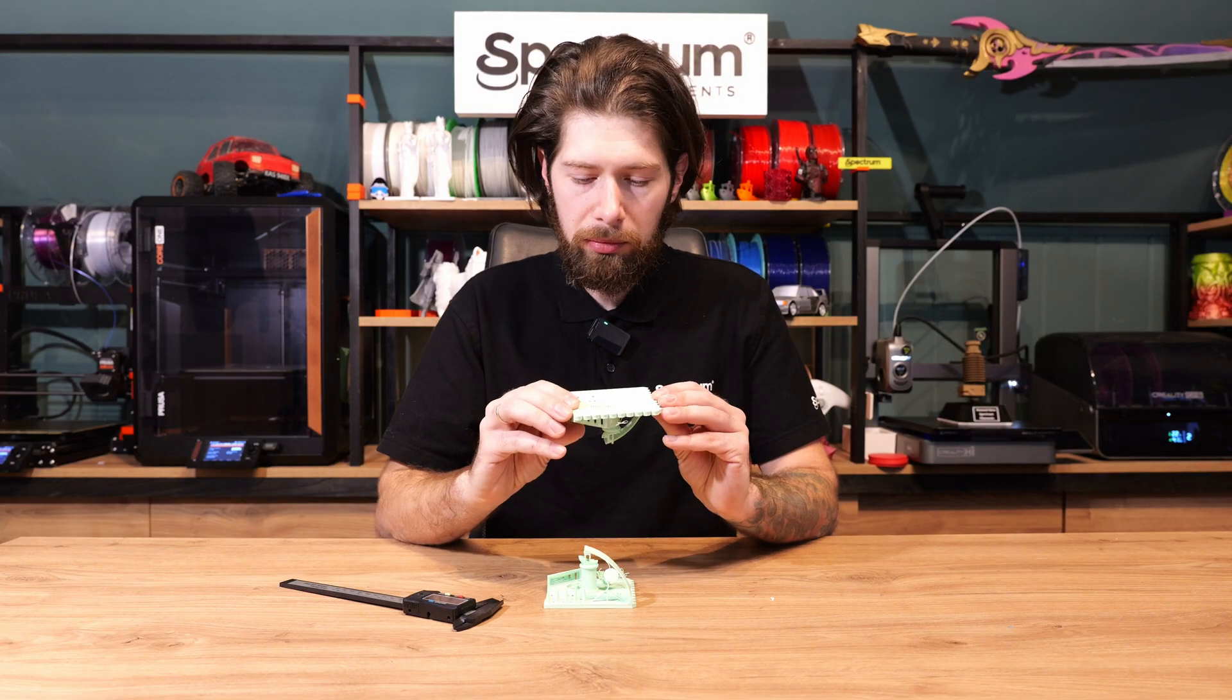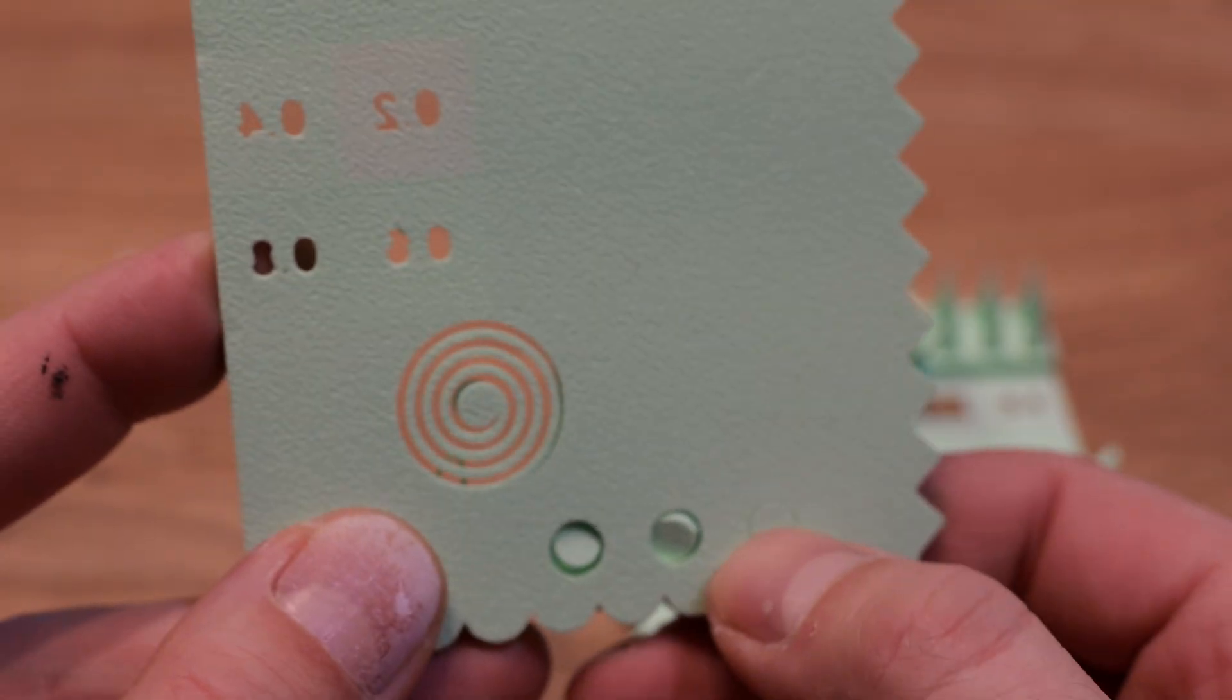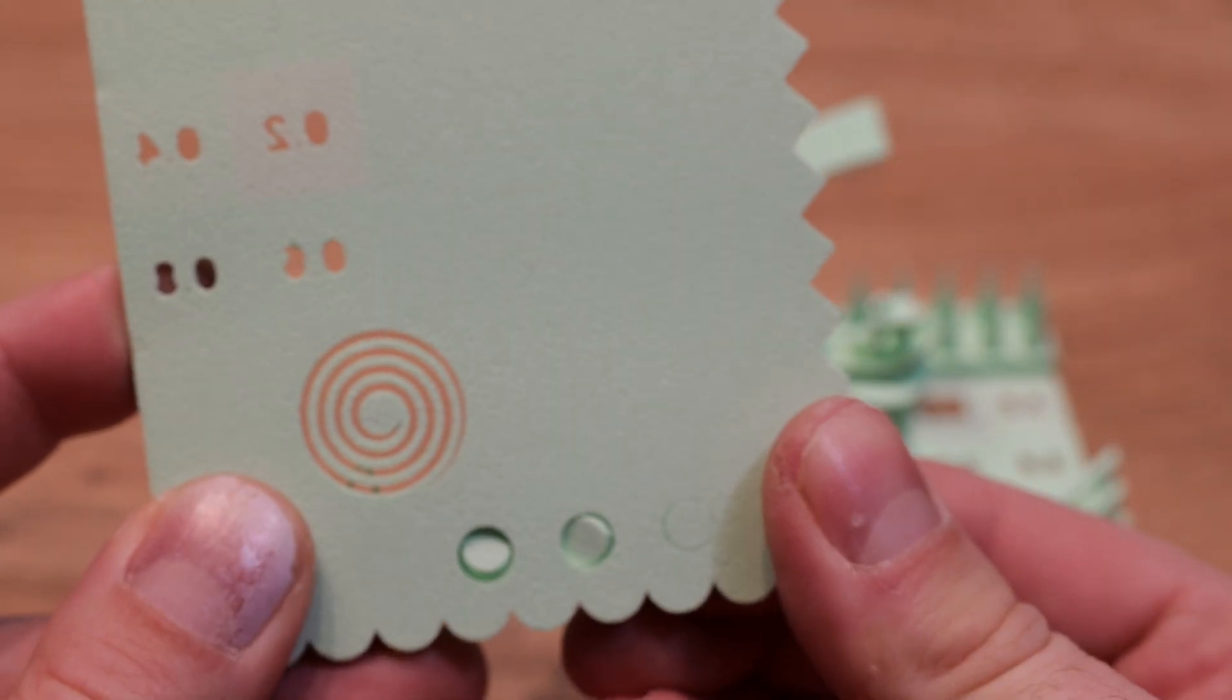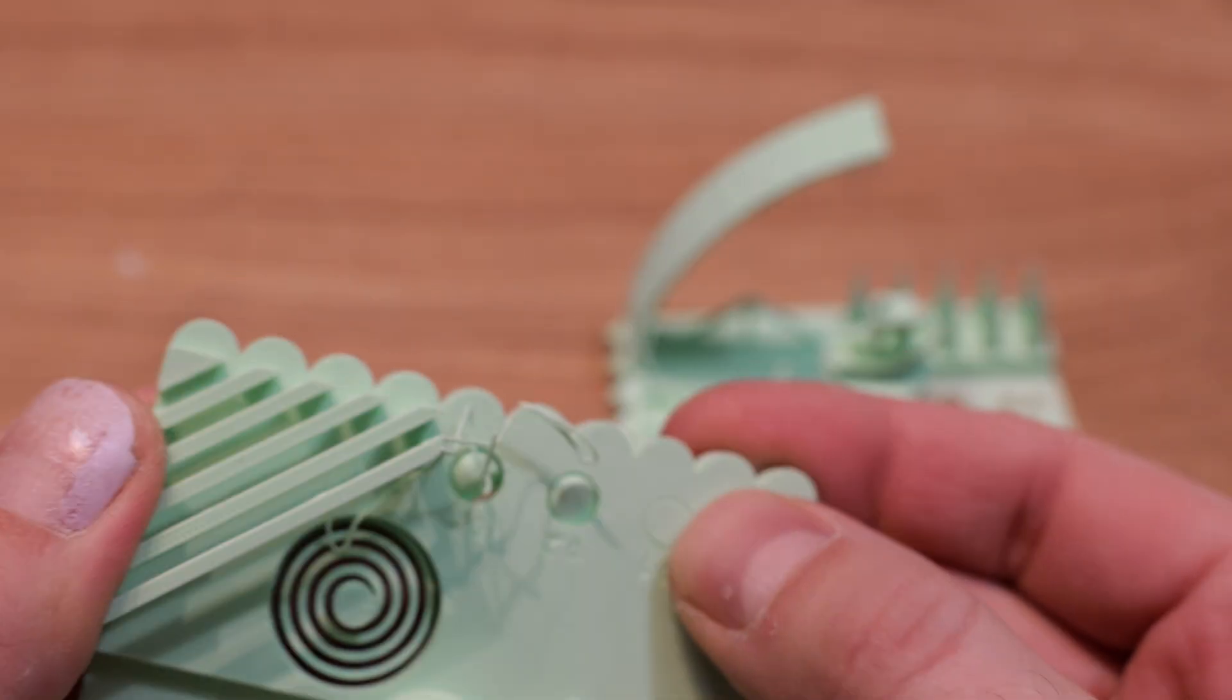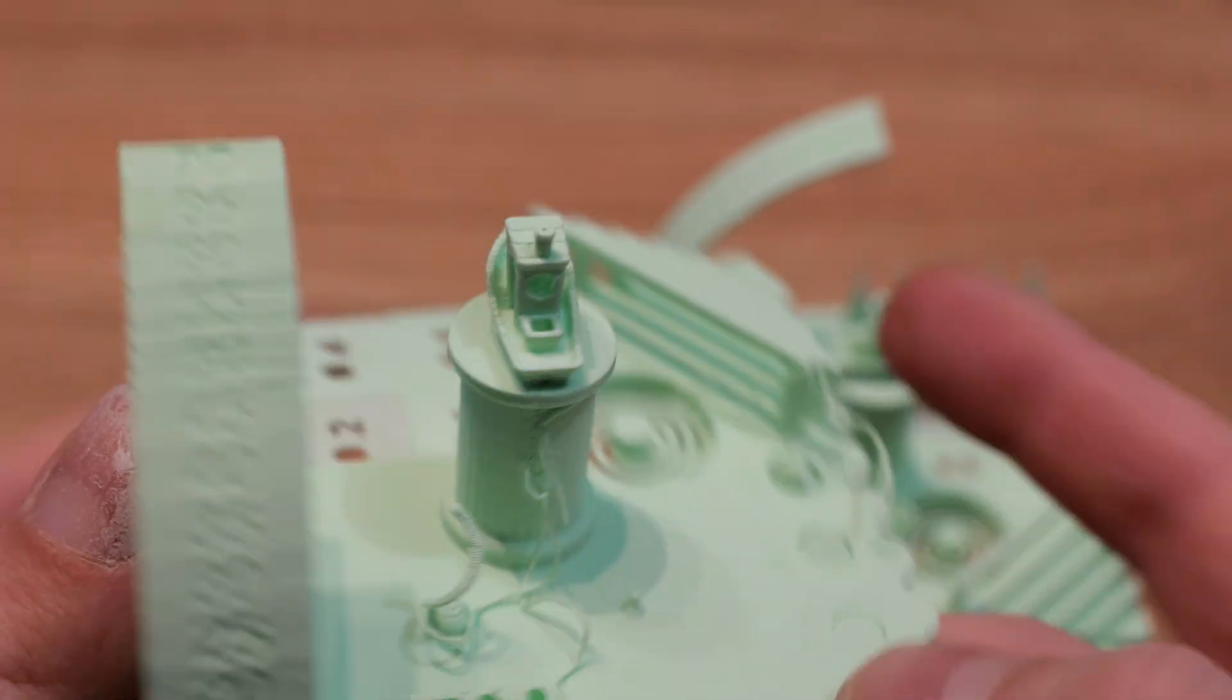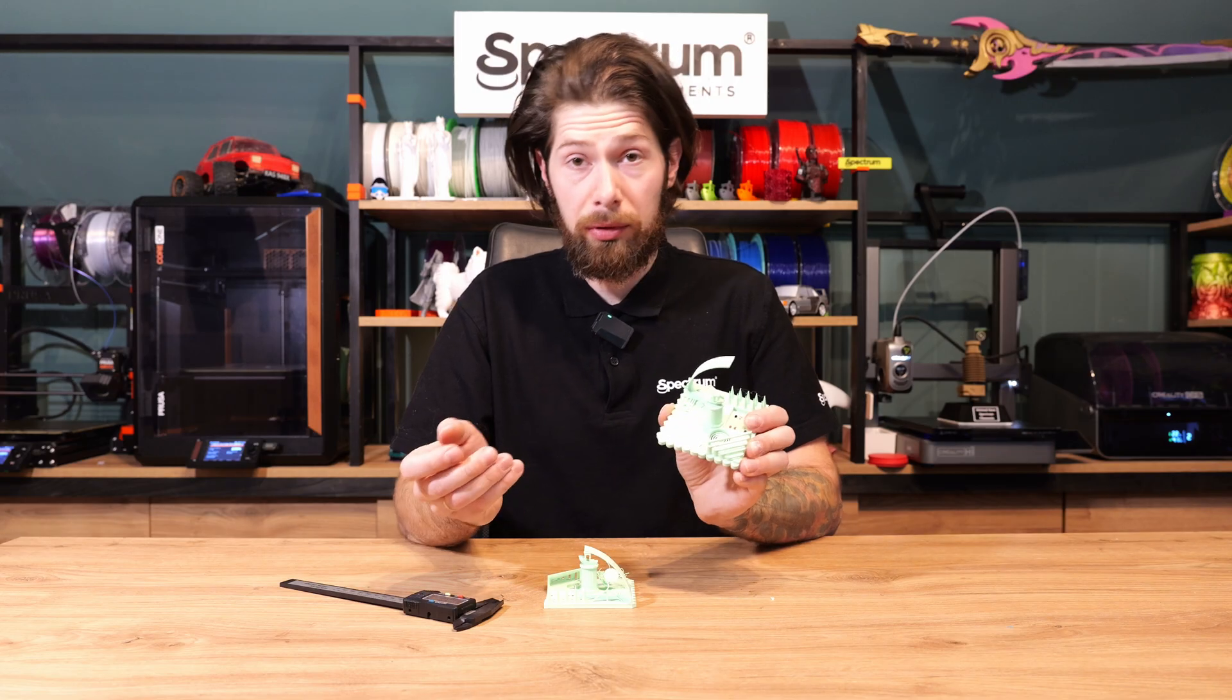Adhesion looks pretty good because we have this spring test. It was printed perfectly so no adhesion issues there. On the tolerance test we saw that 0.3 millimeter in the XY direction is good. 0.2 as well but 0.1 it's welded together as well as 0.05 millimeter unfortunately.